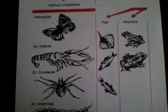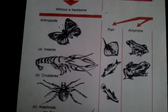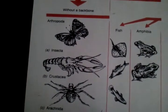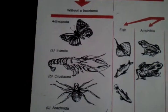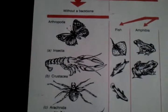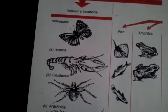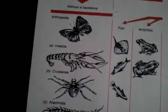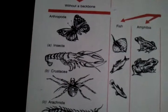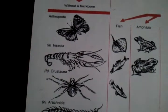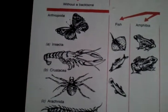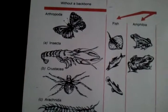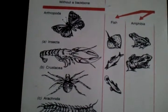Animals that have a backbone have an internal system of bones called the endoskeleton. The vertebrate skull and other bones of the endoskeleton support and protect the animal's internal organs. The skeleton also provides a place where muscles are attached.